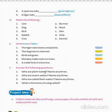Answer the following questions. Who are plant eaters? Name any three. Animals that eat cranes and leaves are called plant eaters — cow, goat, deer, buffalo. These are plant eater animals. Who are insect eaters? Animals that eat insects are called insect eaters, like lizard, spider, chameleon, etc.